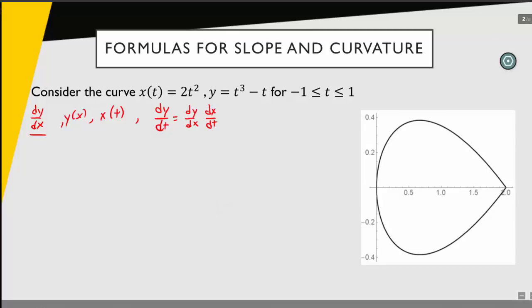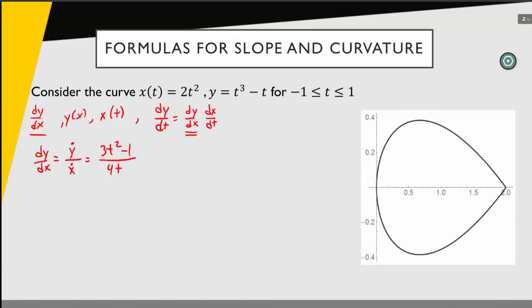Once I write this out, I see the piece that I want — dy/dx. I can solve for dy/dx by dividing by the derivative of x with respect to t. I'm going to use some new notation here: y-dot, which is engineering notation meaning the derivative of y with respect to t, divided by x-dot, the derivative of x with respect to t. So this is a formula for dy/dx. The derivative of y with respect to t is 3t squared minus 1, and the derivative of x with respect to t is 4t. So now I've calculated dy/dx from this set of parametric equations.